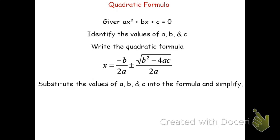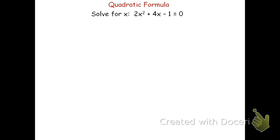We're going to look at two examples in this video. For the first example, we're going to take 2x squared plus 4x minus 1 equals zero. We're going to begin by making sure that the equation is in standard form, and it is — it is given in the form ax squared plus bx plus c. So we can go ahead and identify the values of a, b, and c: a equals 2, b equals 4, and c equals negative 1.